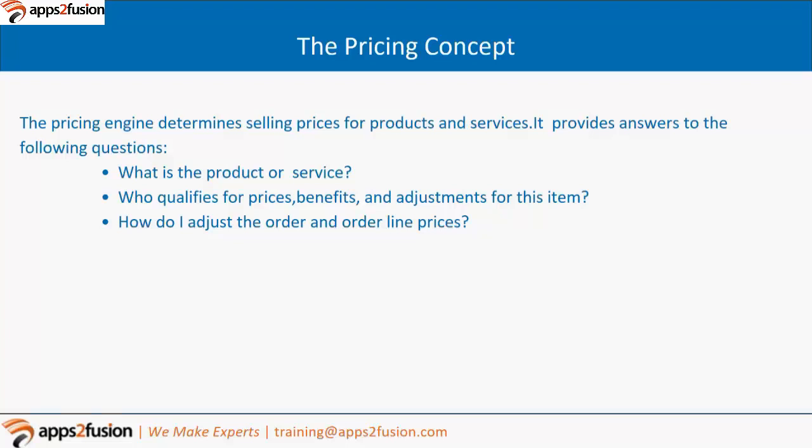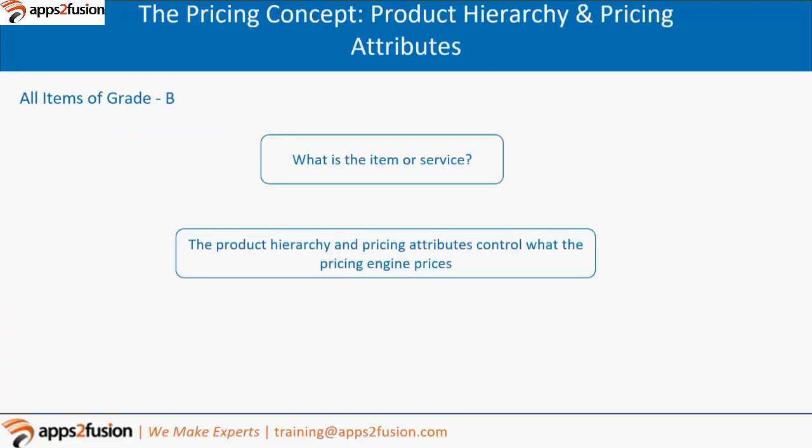We will revisit these terms later, but this is the overview of how the pricing engine behaves or answers a business problem. Regarding product hierarchy and pricing attributes — suppose you have different types of items classified as grade A, grade B, grade C. You want common pricing for grade B items using a category attribute, so that category items are priced at say $10 or at cost plus $20. The pricing engine needs these inputs to price those things.